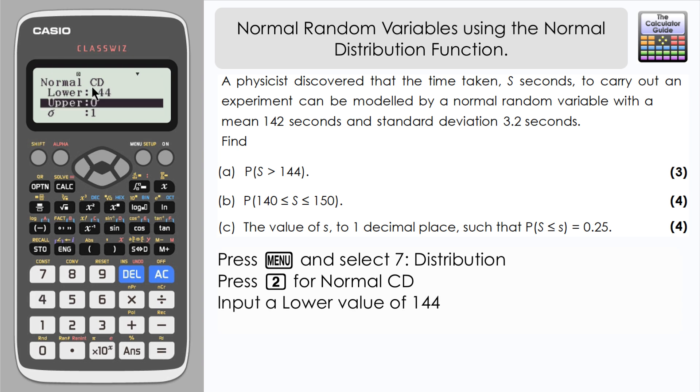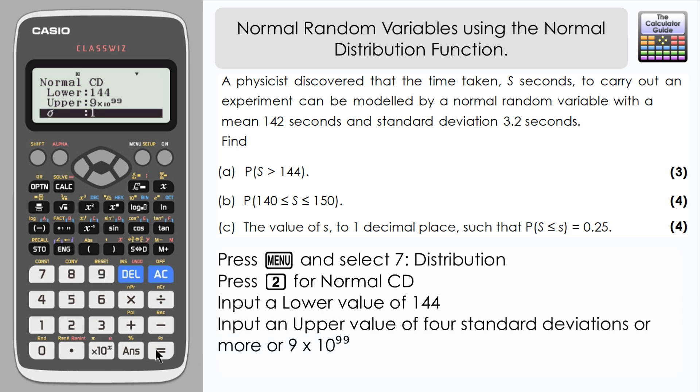In order for the ClassWiz to use the normal distribution function, we need to have an upper limit. I would recommend at least four standard deviations above your lower limit, although we can put a really high value in. I'm going to do 9 times 10 to the power of 99. That's so high that any difference between that and an infinite upper limit is negligible. We're really taking that all the way up to the upper limit of the normal distribution.